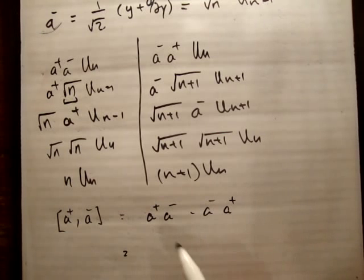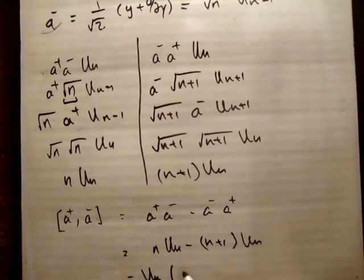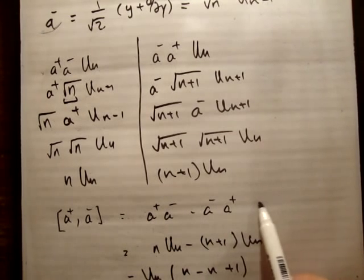So a plus a minus we had was n times un, and we need to take away from that n plus 1 times un. That's going to be equal to un times n minus n plus 1. That's going to be equal to 1. So the point is that the commutator is not equal to 0, it's equal to 1.